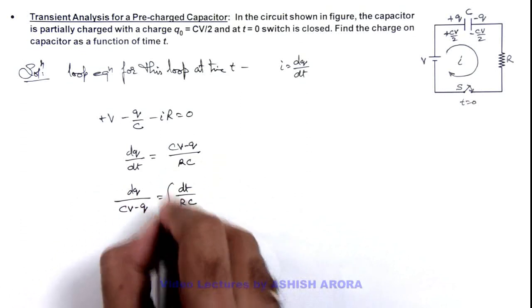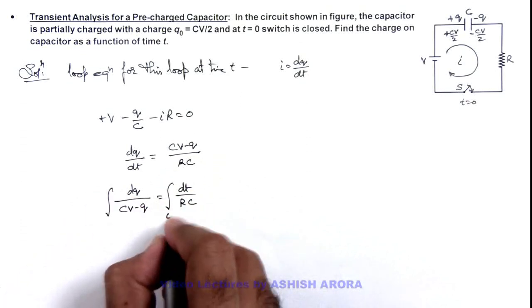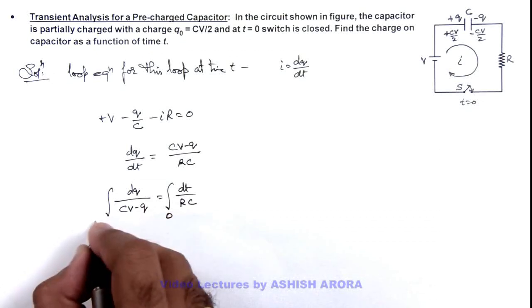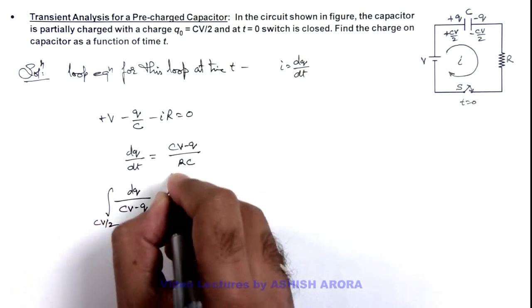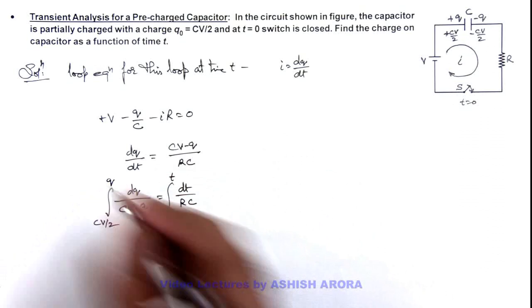And here if we integrate this expression, at t=0 charge on capacitor was CV/2, and at a general time t capacitor charge increases to q.